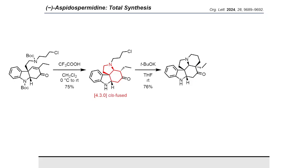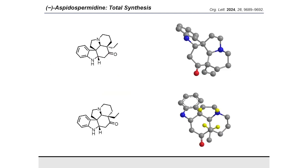The final E-ring was established by means of an intramolecular enolate alkylation using potassium tert-butoxide. Again, full stereocontrol over the newly formed quaternary carbon stereocenter was achieved, with the pentacycle delivered as a single diastereomer, and thus the construction of the pentacyclic framework was complete. The diastereoselectivity for the cis-fused aspidospermine E-ring was rationalized by the absence of destabilizing syn-pentane interactions in the cis-fused isomer.